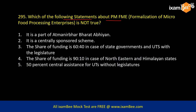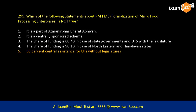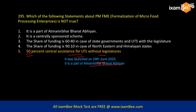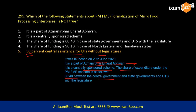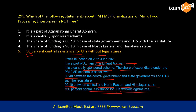Which of the following statements about PMFME — Formalization of Micro Food Processing Enterprises — is not true? The scheme was launched in June last year and is part of the Aatmanirbhar Bharat Abhiyan. It is a centrally sponsored scheme. The share of expenditure under PMFME is 60:40 between central and state governments and UTs with legislature; 90:10 between central government and northeastern and Himalayan states; and 100% central assistance for UTs without legislature. The option stating 50% central assistance for UTs without legislature is NOT true.